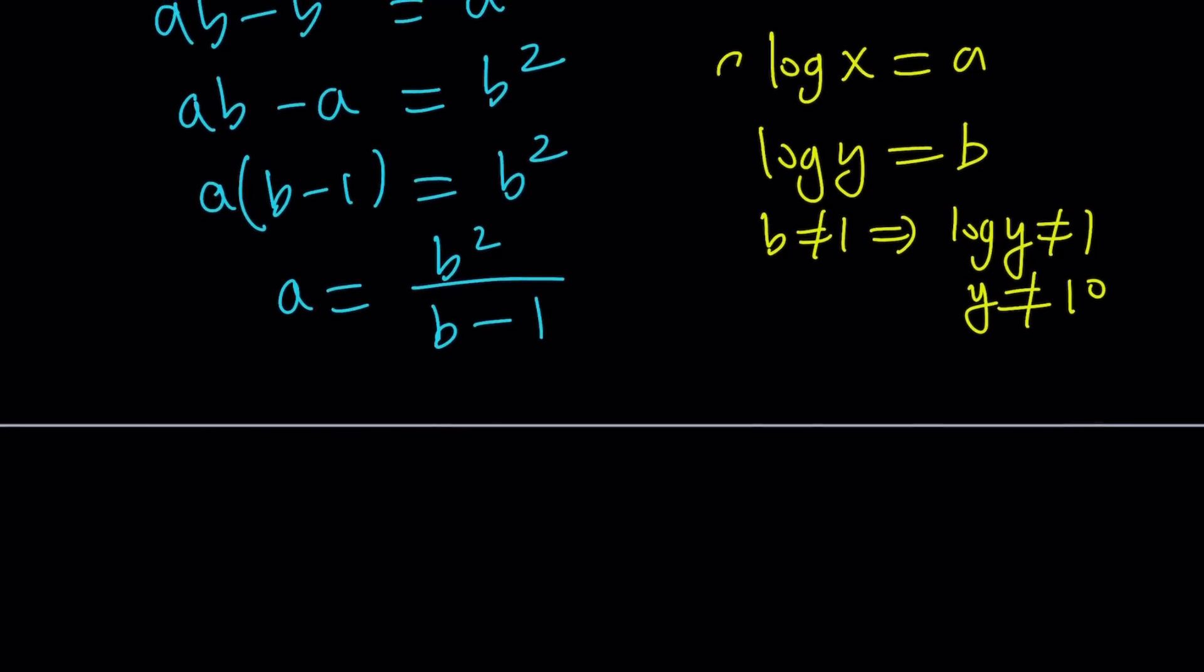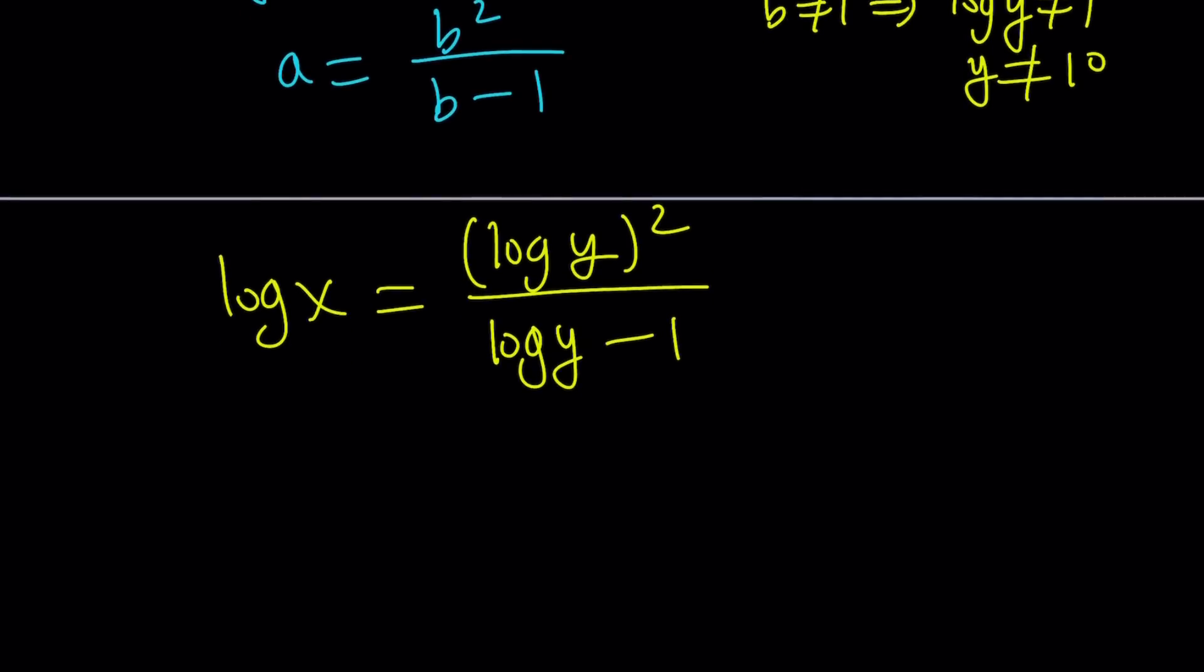So we have these two things. Let's back substitute. Replace a with log x and b with log y. So you have to square log y in the numerator and at the bottom you have to subtract 1. By using properties of logs, obviously log y minus 1 can be written as log y minus log 10 and that can be turned into log of y over 10. I don't know which one is simpler.